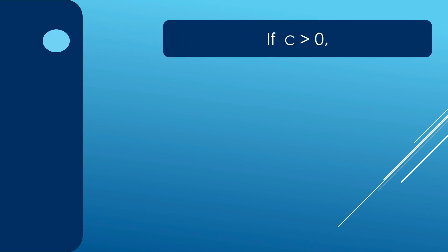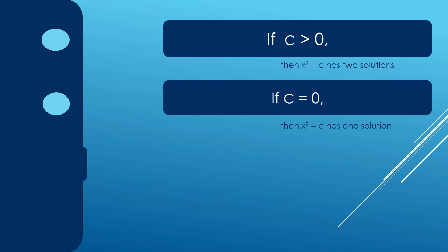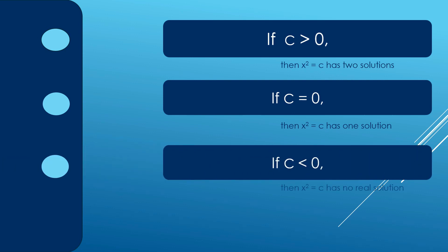Here are some guides for finding how many possible solutions an equation has. The first states that if c is greater than zero, then x squared equals c has two solutions, where x squared is the quadratic term and c is the constant. The second states that if c equals zero, then x squared equals c has one solution. The last states that if c is less than zero, then x squared equals c has no real solution.